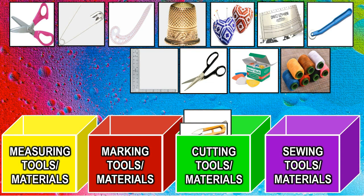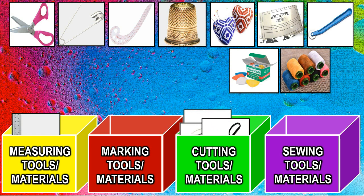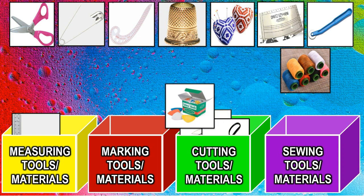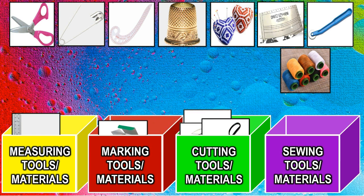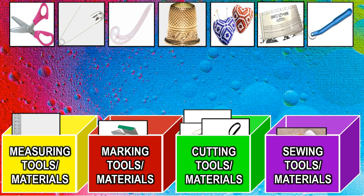Next is the L square, or tailor square — it belongs in the measuring tools and materials box. The third one is bent shears, which goes under the cutting tools. Next, tailor's chalk should be in the marking tools and materials box. Lastly, threads should be placed in the sewing tools and materials box.